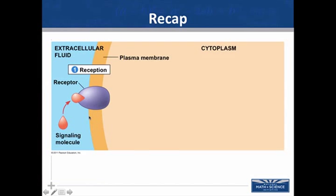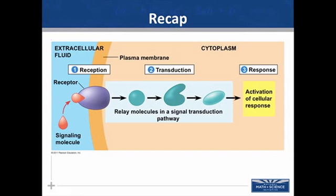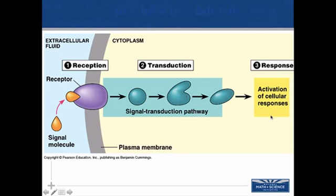In summary, the signal transduction process begins with reception, which occurs when a receptor binds with a signaling molecule and forms a temporary complex. Phase two is the actual transduction, where the signal is converted into a form the cell recognizes and responds to. Then the response can be any of a variety of activities, including formation or activation of an enzyme, activation of a gene, or rearrangement of the cytoskeletal features of the cell.